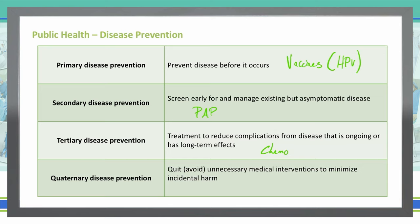Here's something to help you remember these. Primary has a P and we are trying to prevent. Secondary is S — we are screening. Tertiary starts with T and that's to work on treating a disease. And quaternary is where we are quitting or avoiding unnecessary treatments.